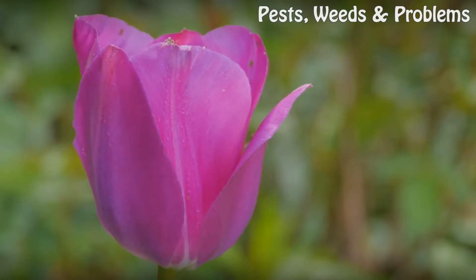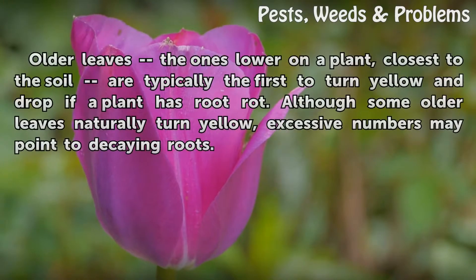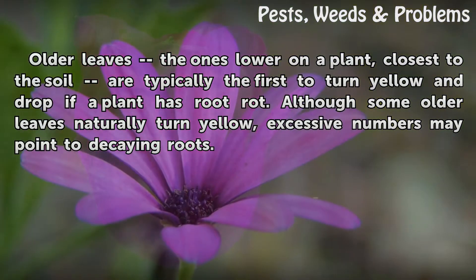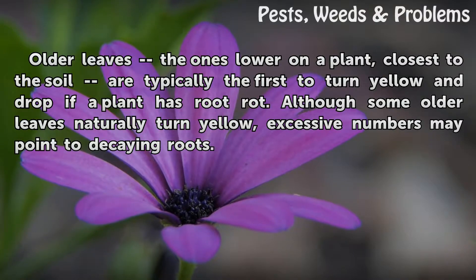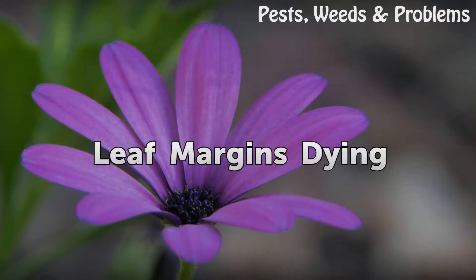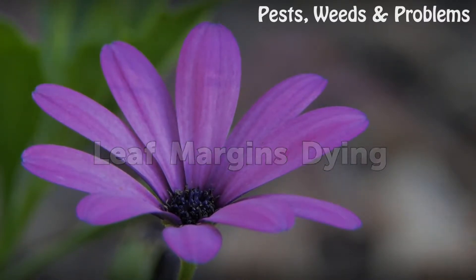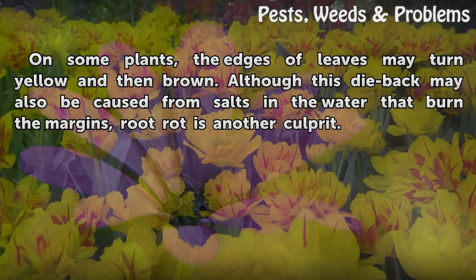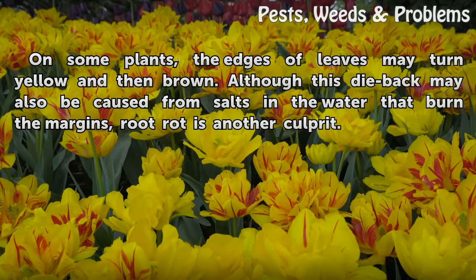Leaves yellowing: older leaves — the ones lower on a plant, closest to the soil — are typically the first to turn yellow and drop if a plant has root rot. Although some older leaves naturally turn yellow, excessive numbers may point to decaying roots. Leaf margins dying: on some plants, the edges of leaves may turn yellow and then brown. Although this dieback may also be caused by salts in the water that burn the margins, root rot is another culprit.